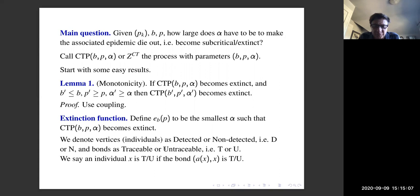Because of this monotonicity, it makes sense to define E(b, p) as the smallest alpha such that the process becomes extinct. Individuals are either detected (D) or not detected (N), and bonds are either traceable (T) or untraceable (U). An individual is T or U depending on whether the bond from its ancestor to itself is T or U — giving us four types of individuals: DT, DU, NT, NU.